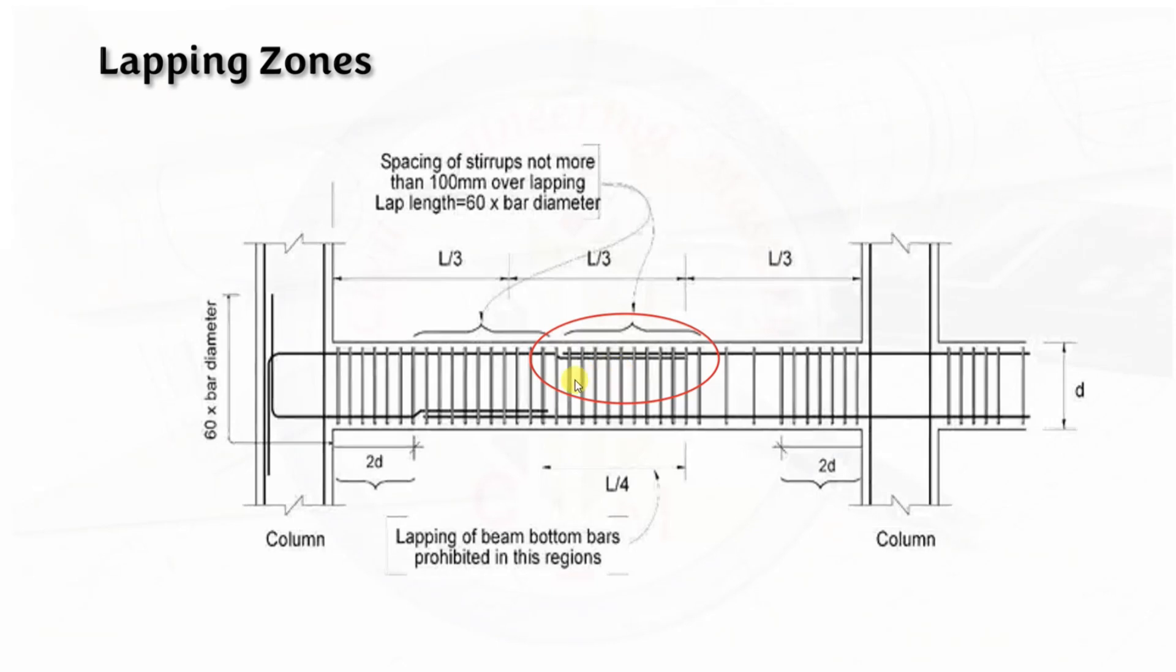We overlap the two bars to transfer the force safely from one bar to another with the bonding of concrete. So this zone we call it as a lap zone, and the length we use for this is called the lap length.